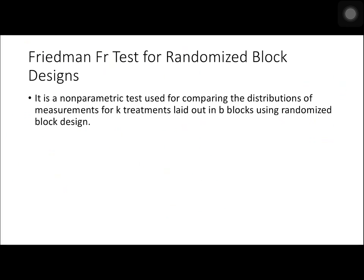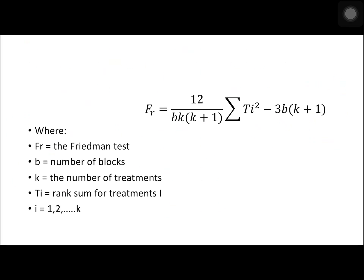Next is the Friedman FR test for randomized block design. It is a non-parametric test used for comparing the distributions of measurements for K treatments laid out in B blocks using the randomized block design. The formula is: FR equals 12 over B times K times (K plus 1), times the summation of treatment totals squared, minus 3 times B times (K plus 1). Here, B is the number of blocks, K is the number of treatments, and TI is the sum of treatment ranks.